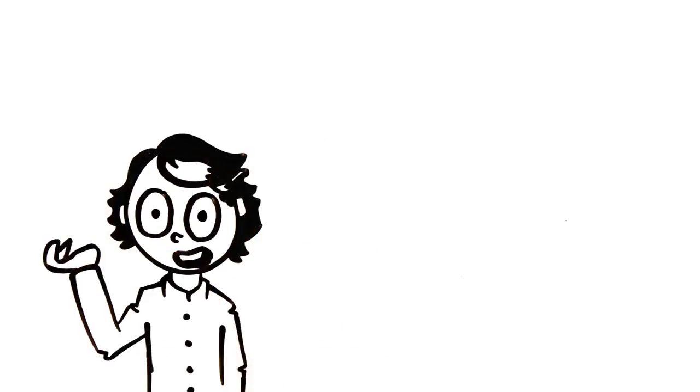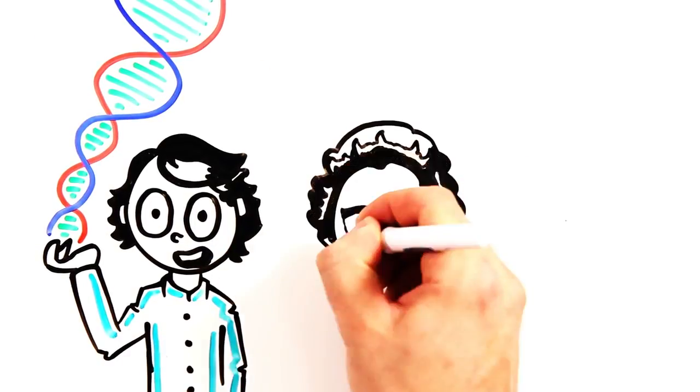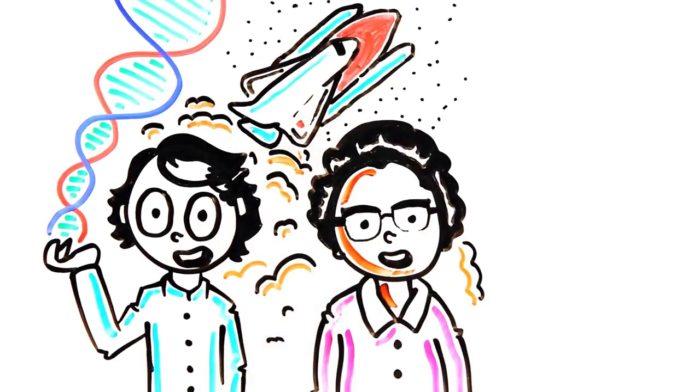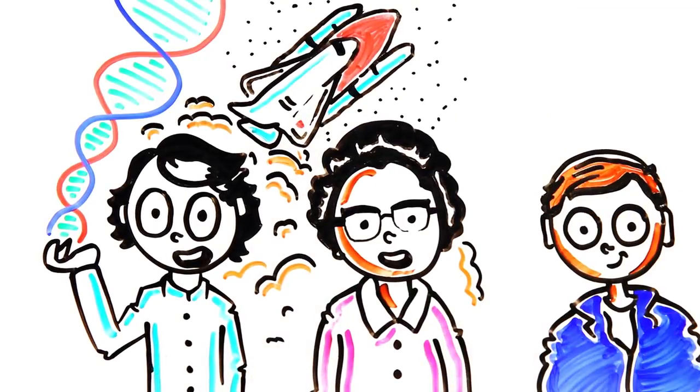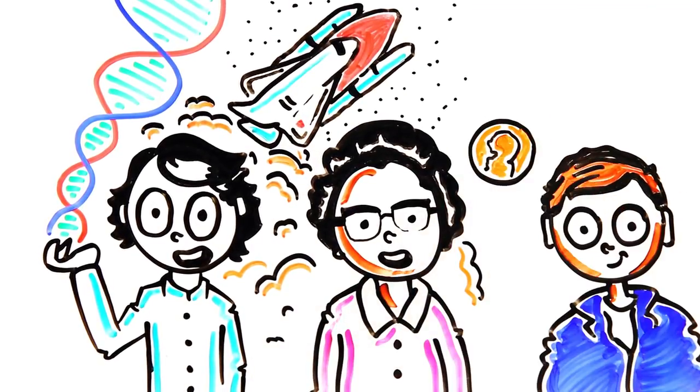Rosalind Franklin allowed us to understand our own DNA, Katherine Johnson helped Apollo 11 land on the moon, and this year, Maryam Mirzakhani is the first woman to win a Nobel Prize for mathematics.